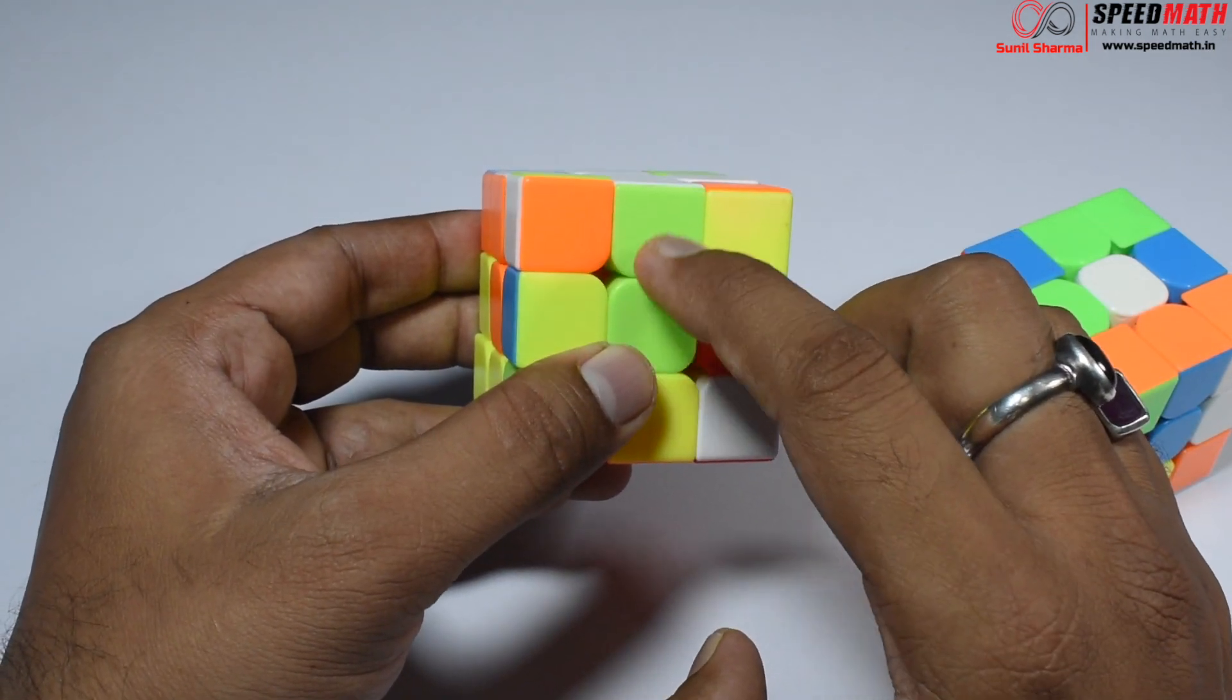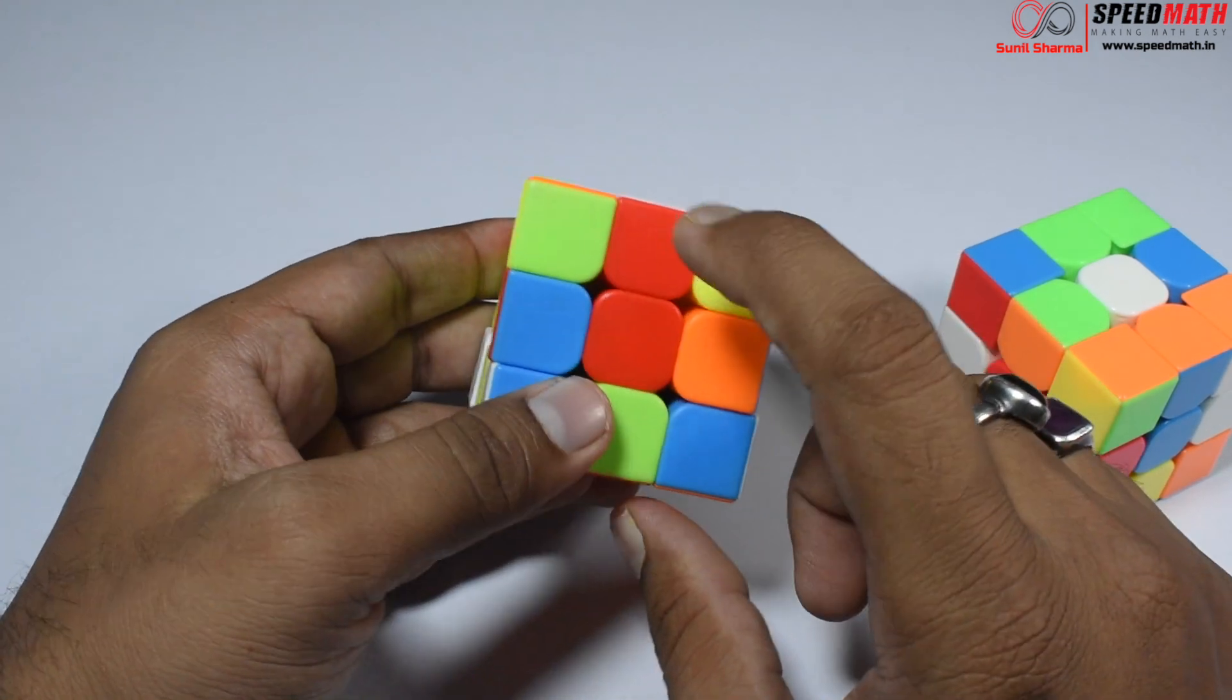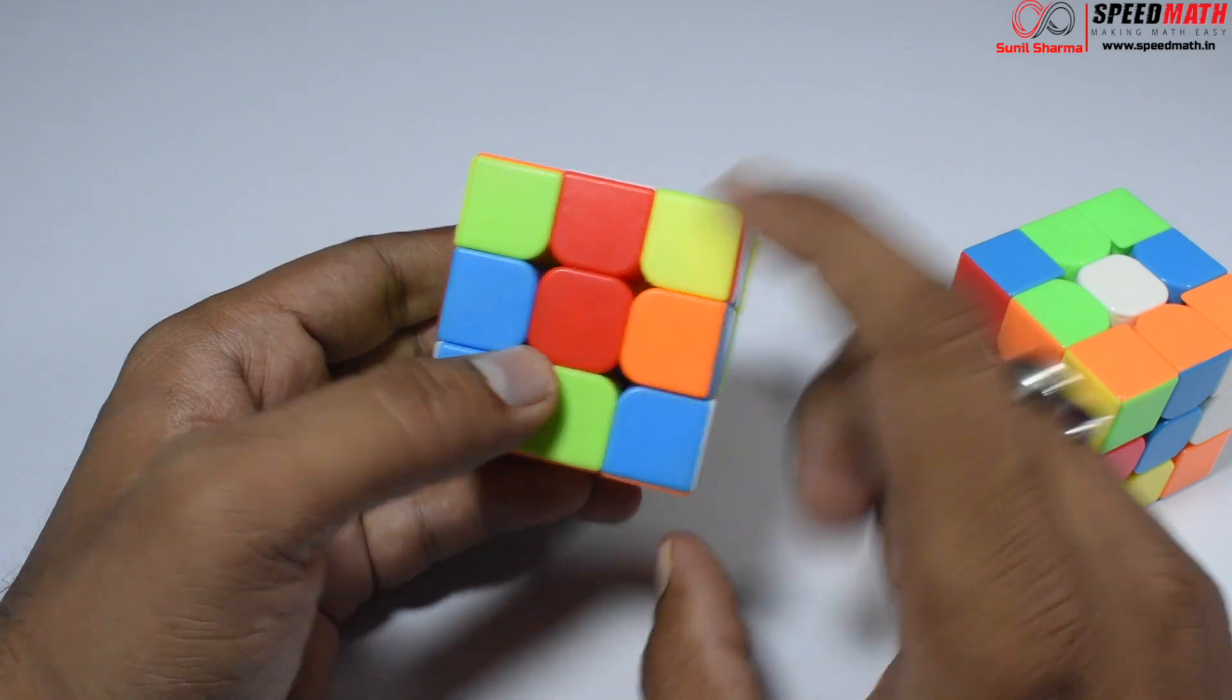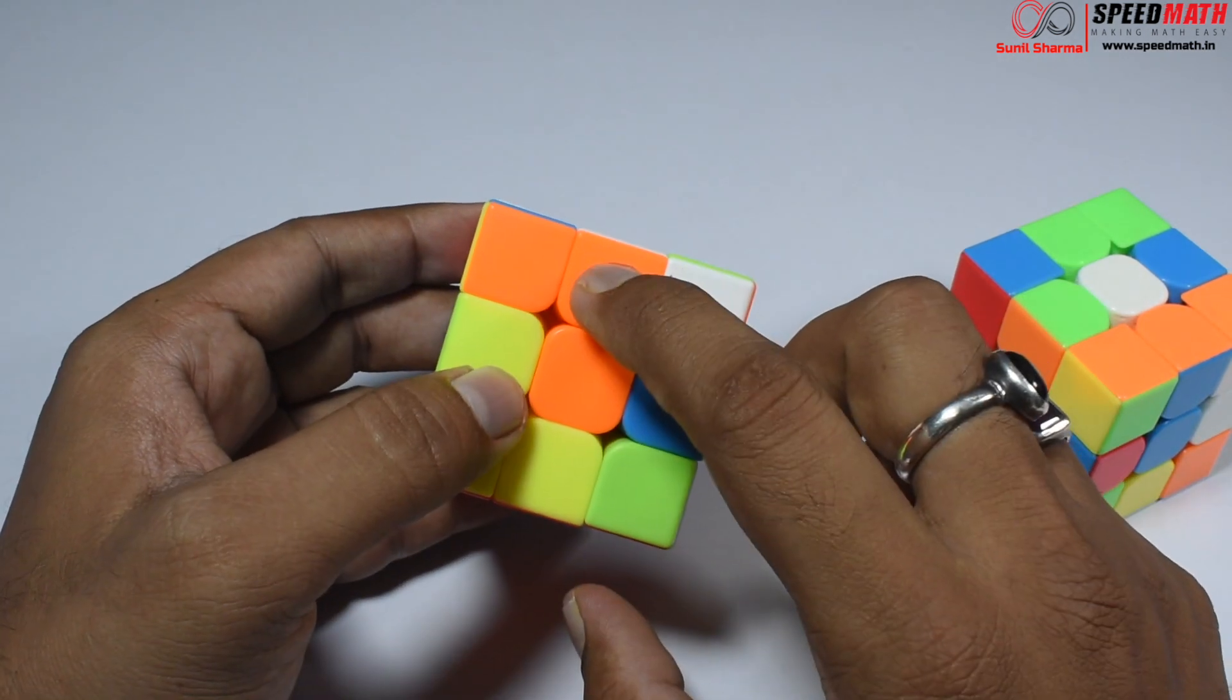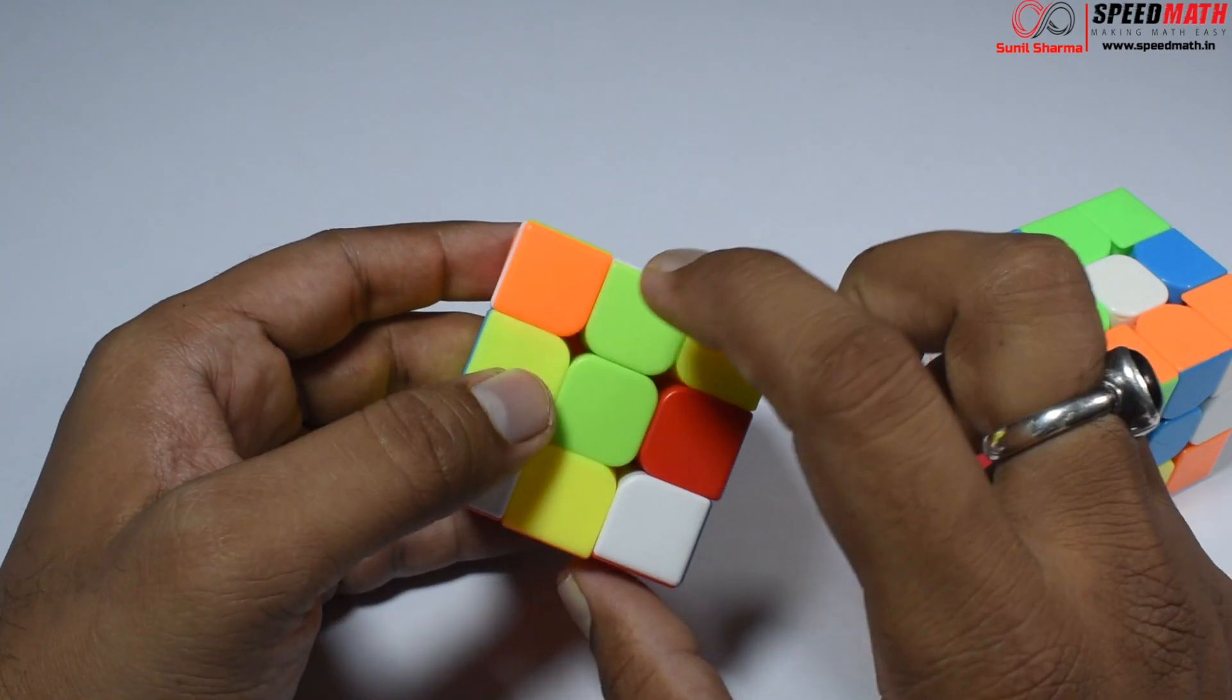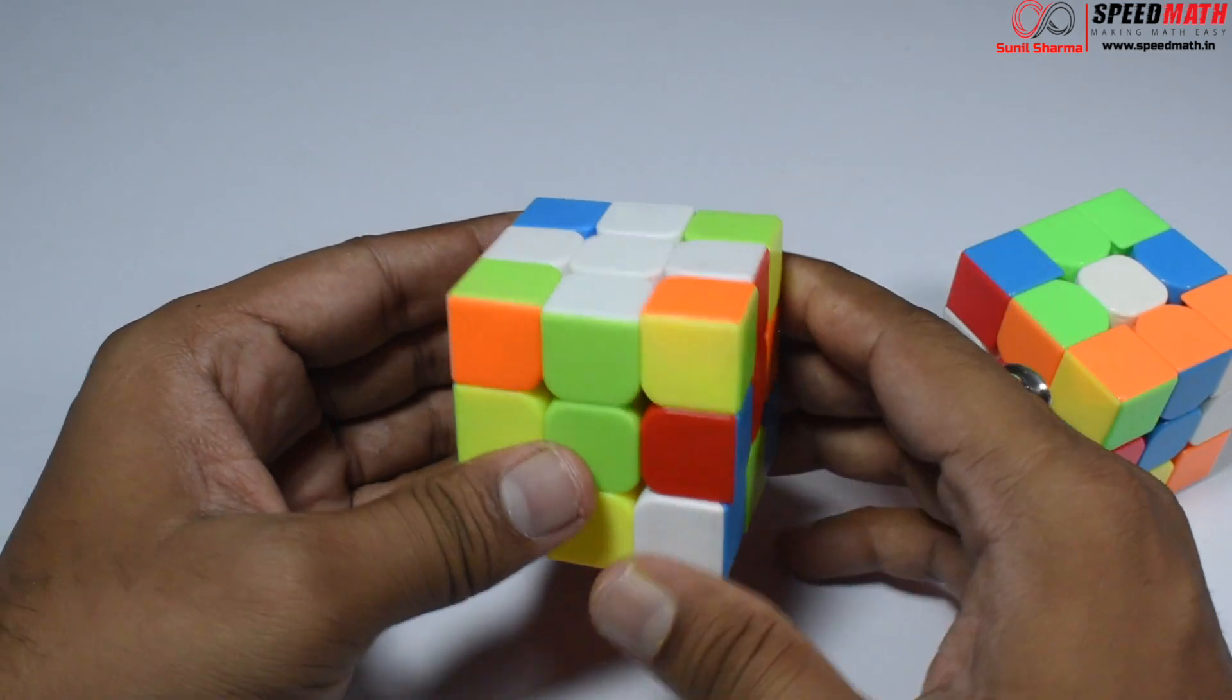What we are looking for is a proper white cross where the center and edge pieces are aligned. Observe: edge piece is green, center piece is green; red edge piece, red center piece; blue edge piece, blue center piece; orange edge piece, orange center piece. This is what we are looking for.